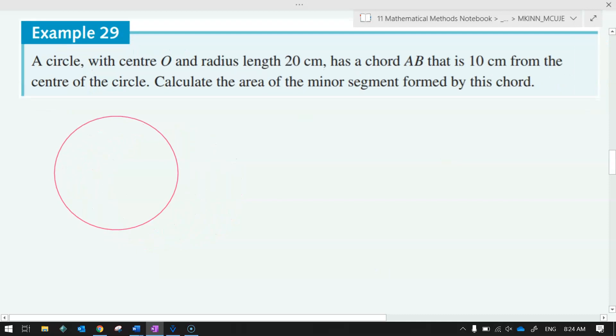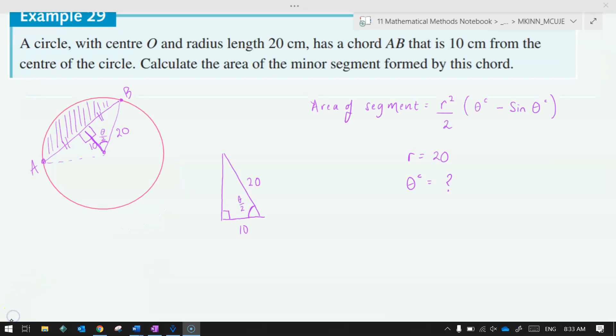Some work for you to do. A circle with center O, radius length 20 has a chord AB that is 10 centimeters from the center of the circle. Calculate the area of the minor segment formed by this chord. Go, go, go. You can definitely do this. It's really just a challenge. Can I interpret the words to make sure I do it correctly? The answer is yes, you can. Give you a few seconds to have a go. Okay, so area of a segment formula. You can remember it or use it. There's a number of different ways you can go about this. If I'm going to use that area of a segment formula, I need to find R and theta in terms of radians. So that's the two variables in that formula.